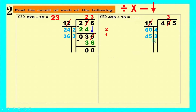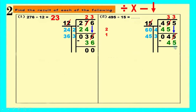We write three above, its answer below, draw a line and minus. Nine minus five equals four, four minus four equals zero. After the minus, bring down — the next digit is five. The number becomes zero after subtracting, and the answer — the quotient — is thirty-three.